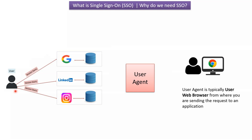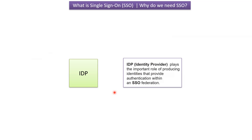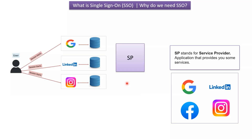Using the web browser, you send requests to either Google, LinkedIn, or Instagram services. The IdP — Identity Provider — plays the important role of producing identities. The user sends credentials to the IdP; the IdP validates the credentials, and if valid, the IdP produces an identity for that user. The SP — Service Provider — is an application that provides services to you. For example, Google, LinkedIn, Facebook, and Instagram are service providers.